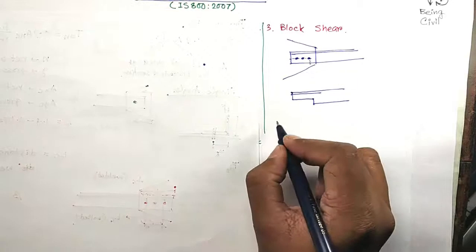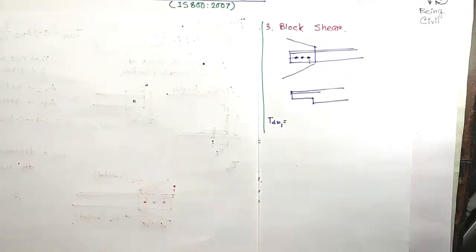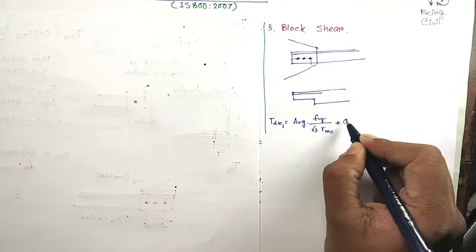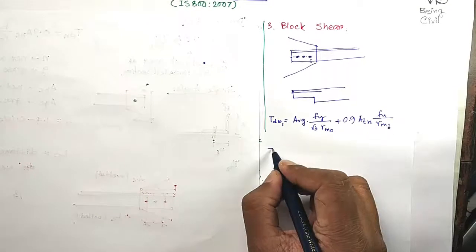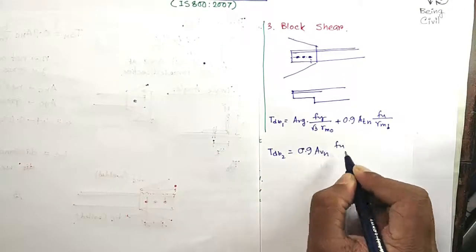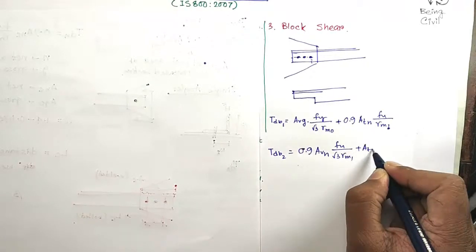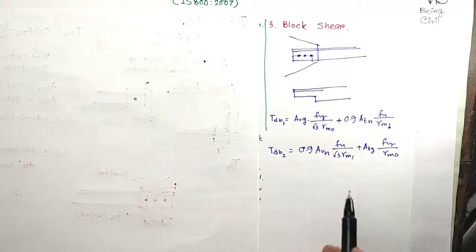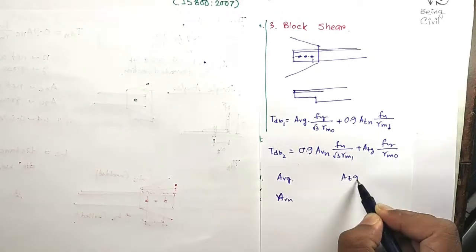The formula is two formulas: TdV number 1 equals (Avg×FY)/(√3×γM0) + (0.9×Atn×FU)/γM1. And number 2, TdV equals (0.9×Avn×FU)/(√3×γM1) + (Atg×FY)/γM0. So the only unknowns are Avg, Avn, Atg, Atn.